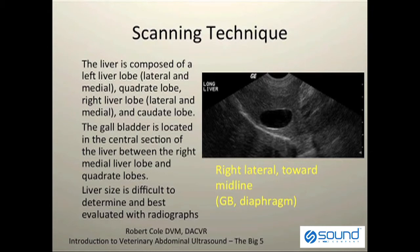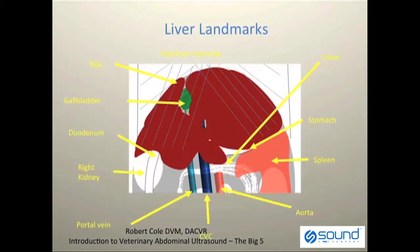The liver size itself is very difficult to determine with ultrasound and is best evaluated with radiographs. Extremes in liver size, including extreme hepatomegaly or microhepatica, are easy to determine. It's the in-betweens that can be difficult.